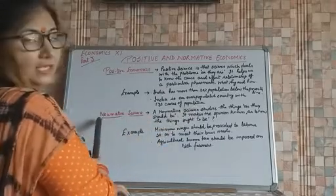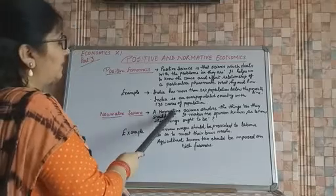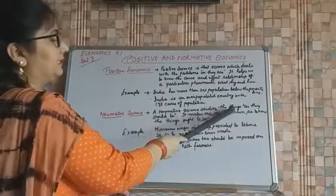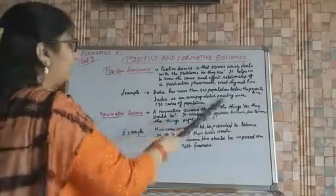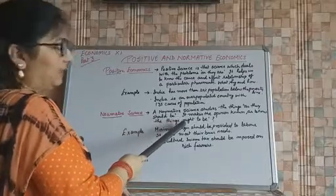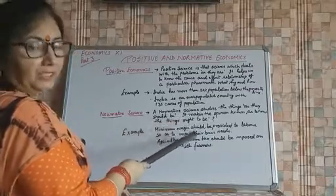Now, the opposite of it is normative science. A normative science studies the things as they should be. Means, everybody may have the individual opinion about it.